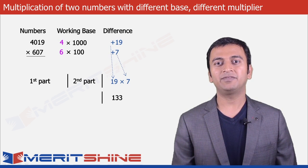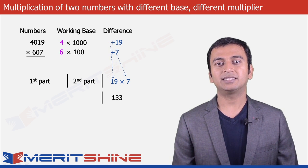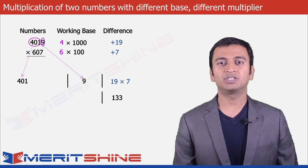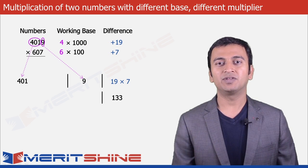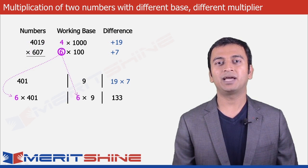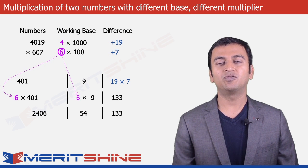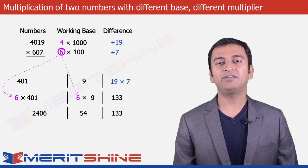To get the second part we will have to choose the larger number and take as many digits from the right as is the difference in the number of zeros in our working bases, which in our case is 3 minus 2, equal to 1. So we will split 4019 as 401 and 9, which will go to the first and second part along with the second multiplier 6. So our first number will become 6 into 401, and the second will become 6 into 9, giving us 2406 in the first part and 54 in the second.